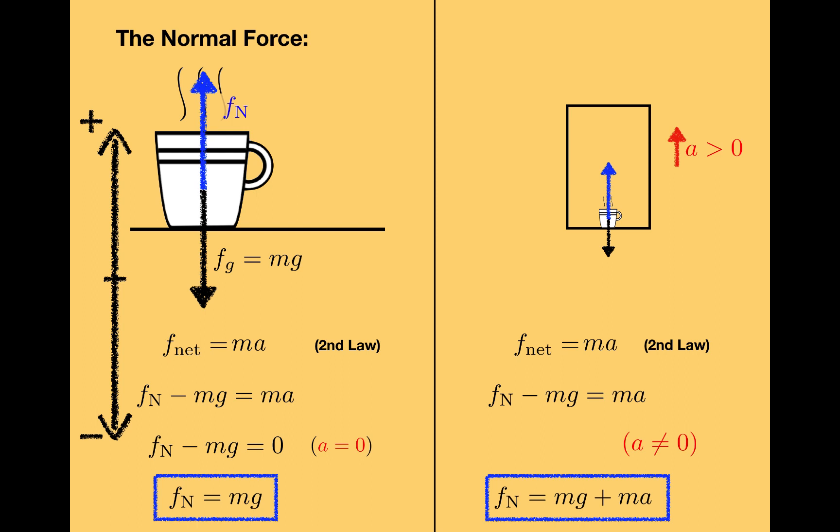Looking at this equation, if acceleration is positive, the normal force is going to be greater than mg. By the way, there are two ways to have a positive acceleration. One way is to go up and speed up, like this, and the other way is to come back down and slow down, like this. In both cases, the normal force is going to be greater than mg.